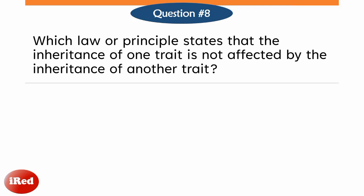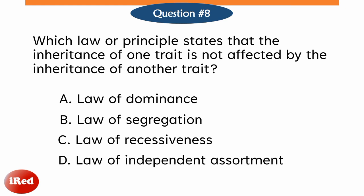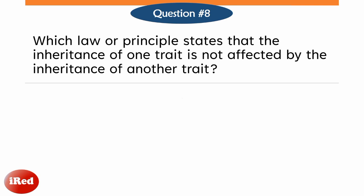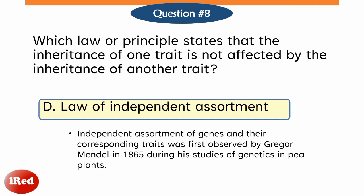Which law or principle states that the inheritance of one trait is not affected by the inheritance of another trait? Letter A, law of dominance; B, law of segregation; C, law of recessiveness; or letter D, law of independent assortment. The correct answer is letter D, law of independent assortment. Independent assortment of genes was first discovered by Gregor Mendel in 1865 during his studies of genetics in pea plants.